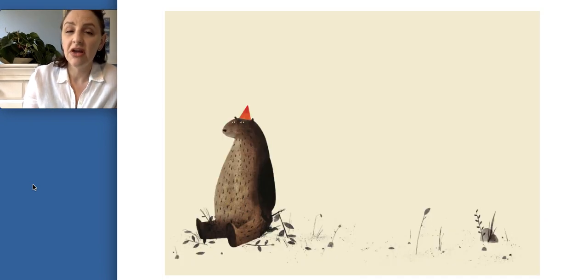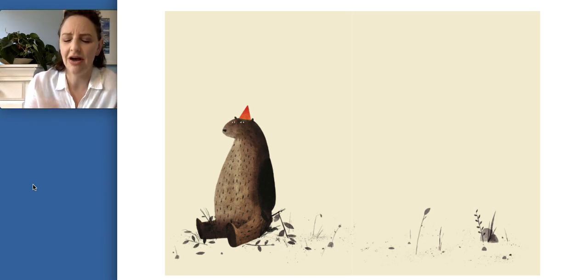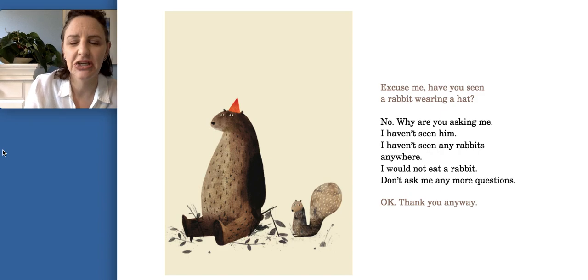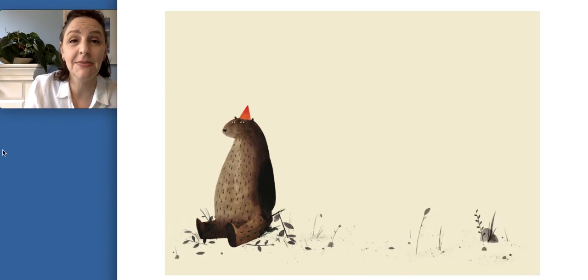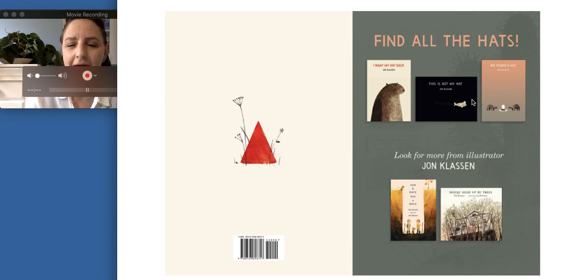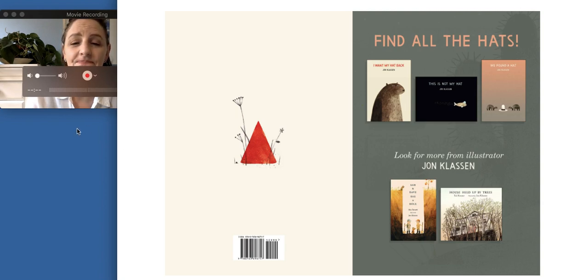So in this story, the author does not tell us everything. We don't really know what happened to the rabbit. He says "I would not eat a rabbit." This is a book where you can make some inferences. And it's a great story and I wanted to share. We're going to read This Is Not My Hat next — I will read that one to you another day. Have fun. Thanks for joining me.